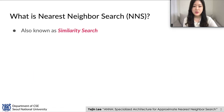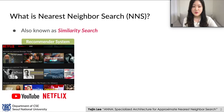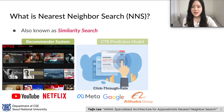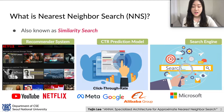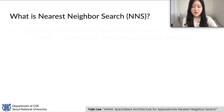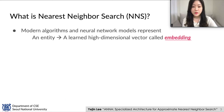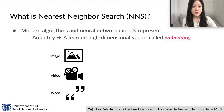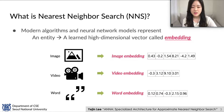Nearest Neighbor Search, also known as Similarity Search, has been a key kernel for primary applications such as recommendation systems used at YouTube or Netflix, click-through rate prediction models used by major industries, conventional search engines, and other multimedia search services. Today, a variety of modern algorithms and neural network models represent an entity such as an image, video, or word as a learned high-dimensional vector called an embedding.